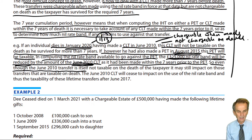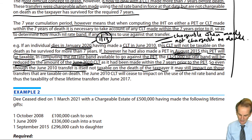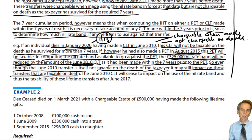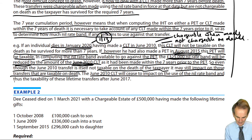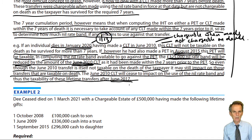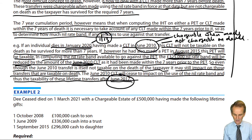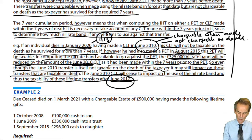Even though the June 2010 CLT is not itself taxable on the death of the taxpayer, it may still impact — and will impact — on those transfers that are taxable on death, the lifetime transfers chargeable on death within the seven years of the date of death, which also fall within seven years of that earlier CLT. The accumulation principle only applies to a seven-year period, so the June 2010 CLT ceases to have effect after June 2017.